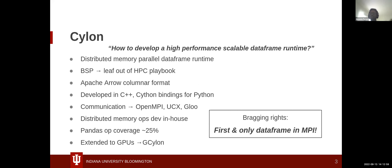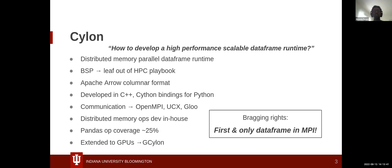We take a leaf out of the HPC playbook — we are looking at a bulk synchronous parallel answer to it. It would be a distributed memory parallel data frame runtime, and we are looking at Apache Arrow column format predominantly for vectorizing operators. It's developed on top of C++, and we use Cython bindings for Python. Currently Cython supports OpenMPI, UCX, and Glue for communication. All our distributed operators are developed in-house. We follow the Pandas API and currently have about 25% of Pandas operators, covering most of the key data frame operators.